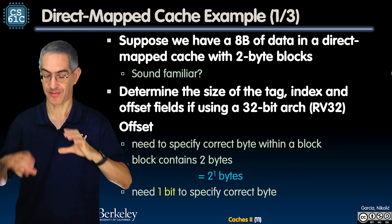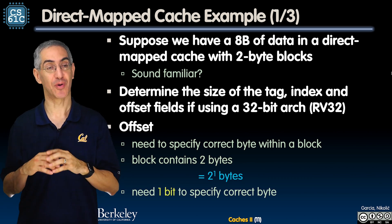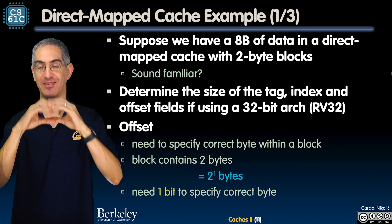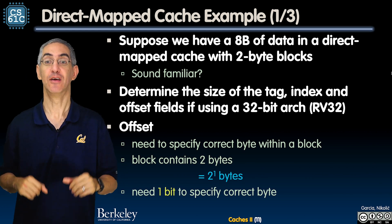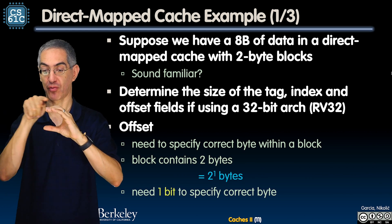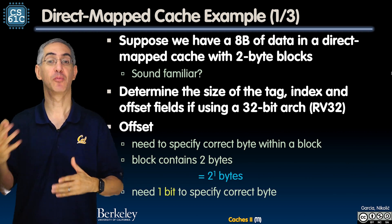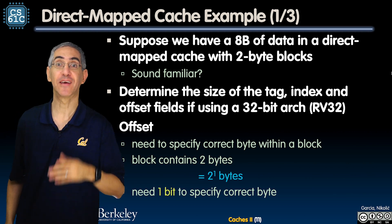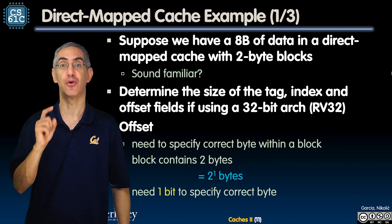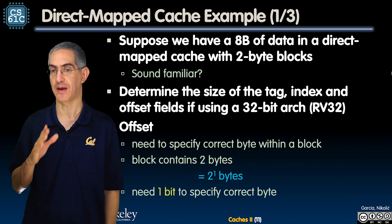Eight bytes is the overall area of the problem — eight bytes total, two byte blocks, two bytes across. Now we're going to ask some questions: how big is the tag, index, and offset fields if we're doing a 32-bit architecture?